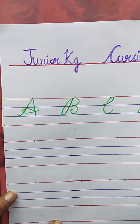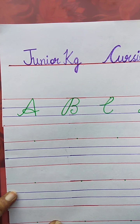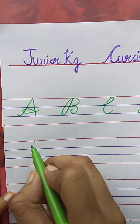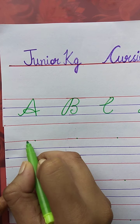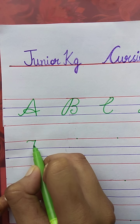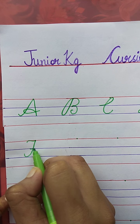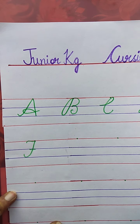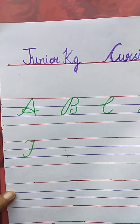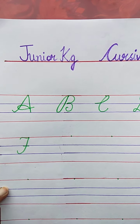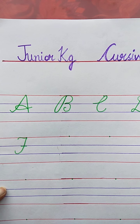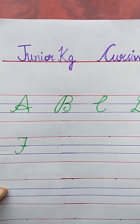Tell me the next letter. F. F for Fish. Very good. Speak with me. The spelling of Fish is F-I-S-H. Fish.